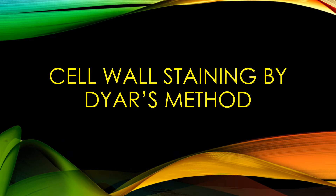Today's video is on cell wall staining by Dyer's method. As we all know, cell wall is the outermost rigid covering of the bacterial cell, and on the basis of the structure of a cell wall, bacterial cells are divided into two main groups: gram positive bacteria and gram negative bacteria. For observation of this cell wall, it is important to stain it, and here we are going to see the procedure of staining the cell wall by Dyer's method.